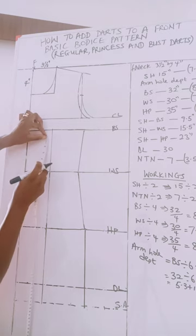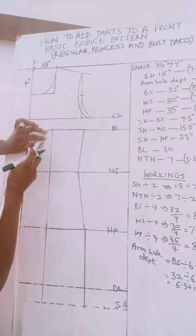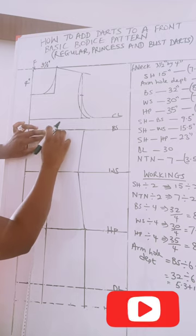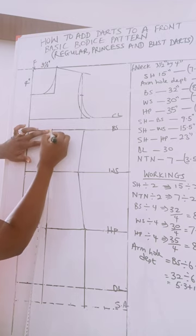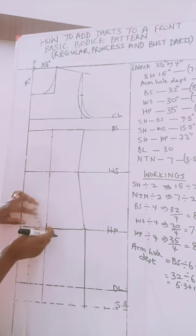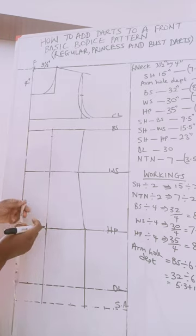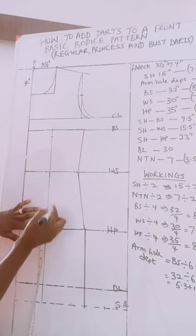Now we are going to be marking the dart. On the bust line you're going to be coming down by one inch. I'll get the dart to start from there, and then on the hip line you're going to go up by two inches.